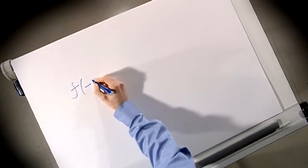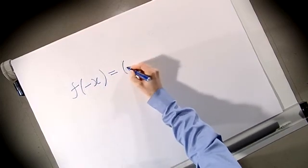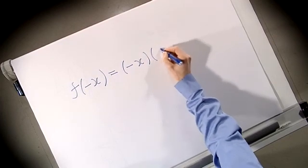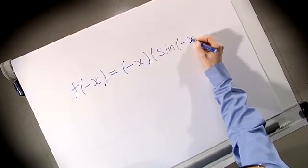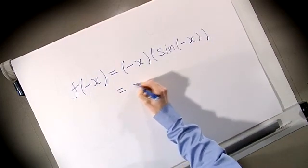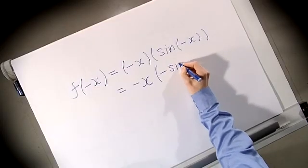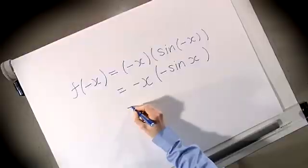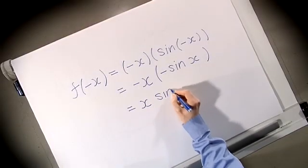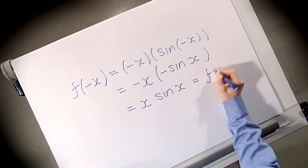To sketch the function, first let's see if it has any symmetries. We'll look at f(-x): f(-x) = (-x)·sin(-x). Now sin(-x) = -sin(x), so when we multiply those two together we get x·sin(x), which is just f(x). Because f(-x) = f(x), the function f(x) is even.